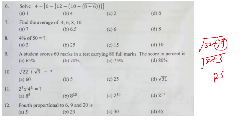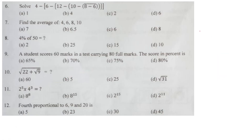Question number 10: square root of 22 plus root 9. Root 9 is 3, and the square root of 25 — what is the square root of 25? Question number 11: 2 raised to the power 5, 4 raised to the power 3 — 2 squared, 3 multiplied by 2 multiplied by 3.